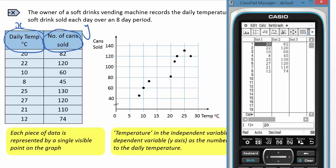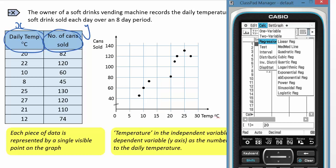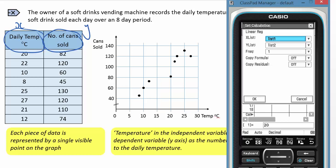We can then go to calculate and we're going to perform a linear regression. List one is my x, list two is my y, and I'm going to copy the formula.